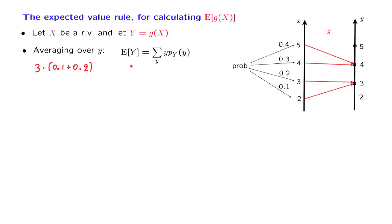Then we continue with the summation by considering the next value of little y. The next possible value is 4. And this gives us a contribution of 4 weighted by the probability of obtaining a 4. The probability that y is equal to 4 is the probability that x is either equal to 4 or to 5, which happens with probability 0.3 plus 0.4.